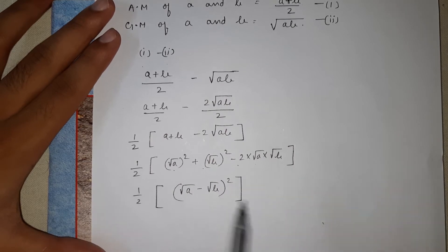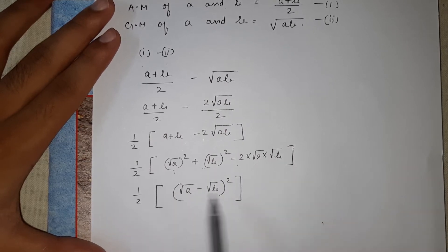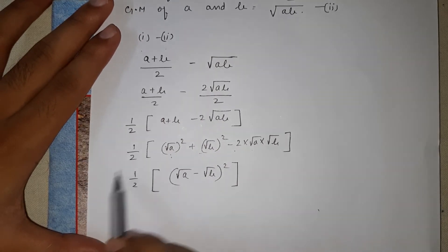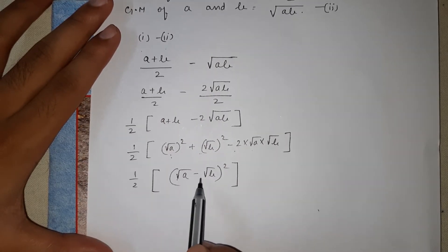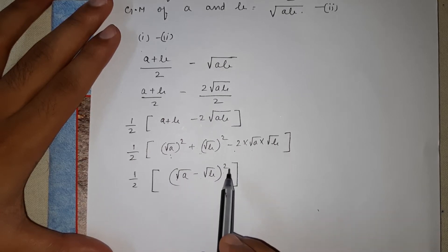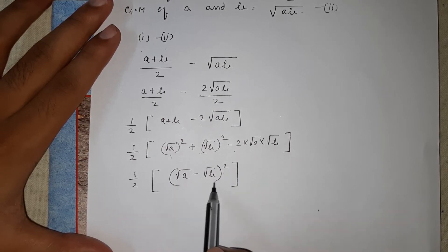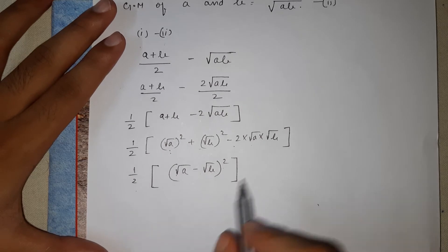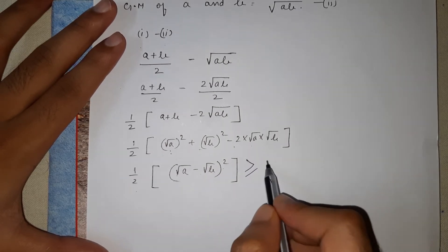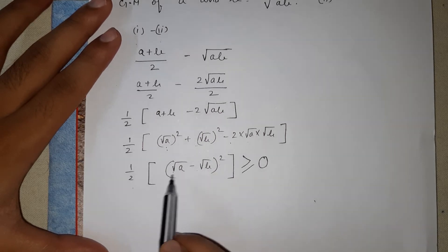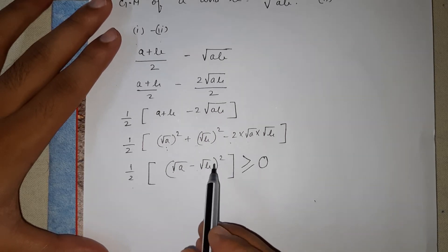Recall that (a − b)² = a² + b² − 2ab, so similarly (√a − √b)² is always non-negative because it is a perfect square. Multiplying by one-half keeps it non-negative, so this entire expression is always greater than or equal to zero.